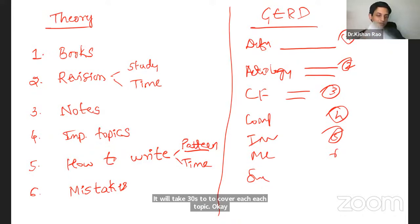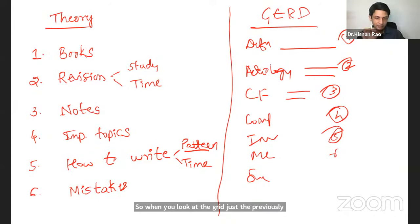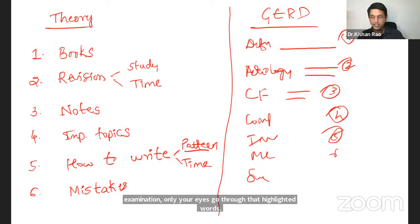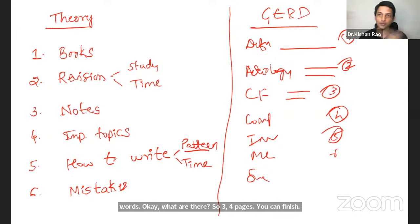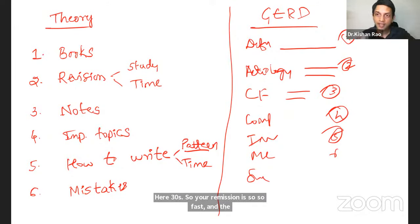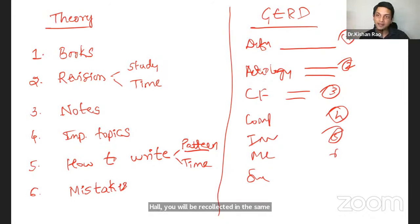So, when you look at the GERD, just the previous day of examination, only your eyes go through that highlighted words, 10 words. Whatever is there. So, three, four pages, you can finish it in 30 seconds. So, your revision is so fast. And the advantage of this numbering is, when you sit in the exam hall, you will be recollected in the same order or same manner. So that important point, sidings will not be missed.